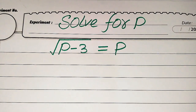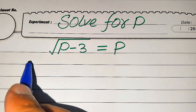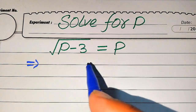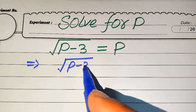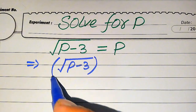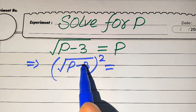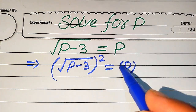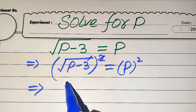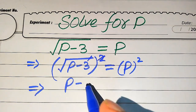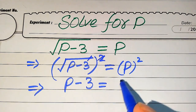First we need to remove the square root sign from the left hand side. In order to remove it, we square both sides. When we square both sides, it becomes (√(P − 3))² = P², and the square root and square cancel out, giving us P − 3 = P².